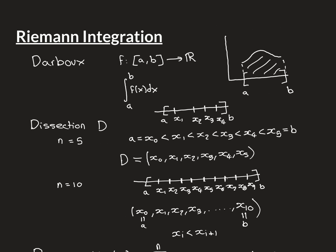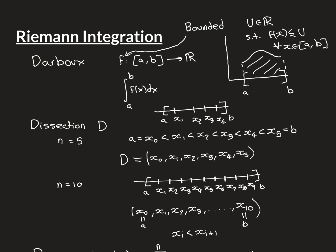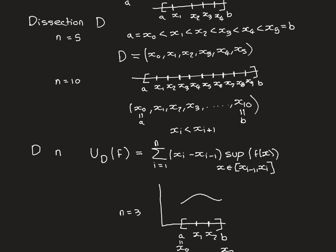For our Darbo or Riemann integral to be defined, the function must be bounded above and below on the interval. Bounded above means there is some capital U in the real line such that f(x) is less than or equal to U for all x in the closed interval AB. Similarly, bounded below means there is a lower bound capital L such that L is less than or equal to f(x) for all x in AB. I'm going to insist the function is bounded, as that's necessary even for us to define the upper and lower Riemann sums.